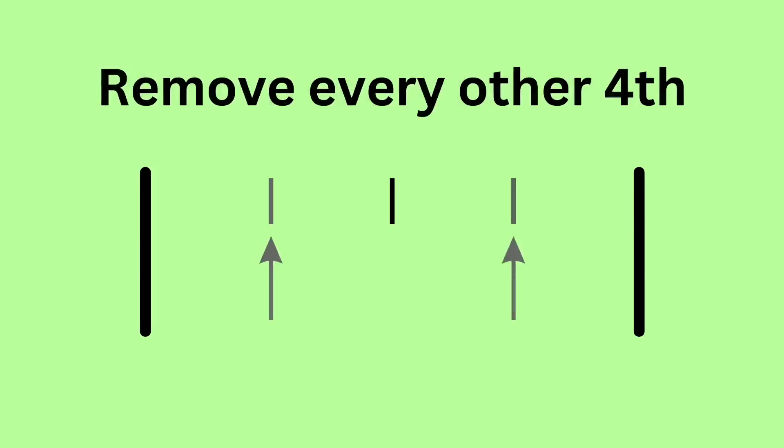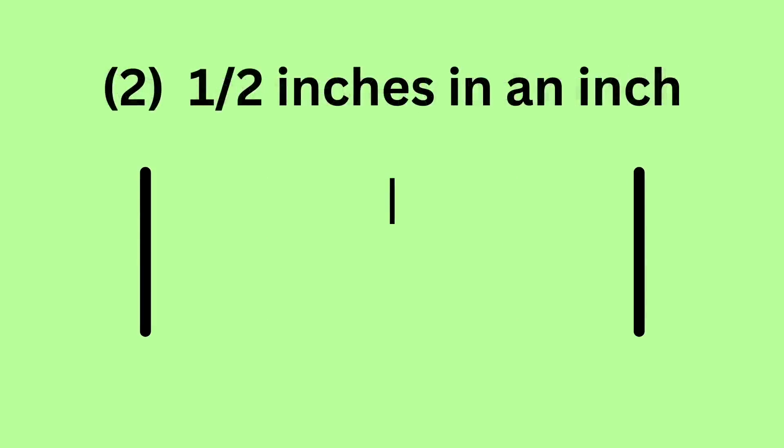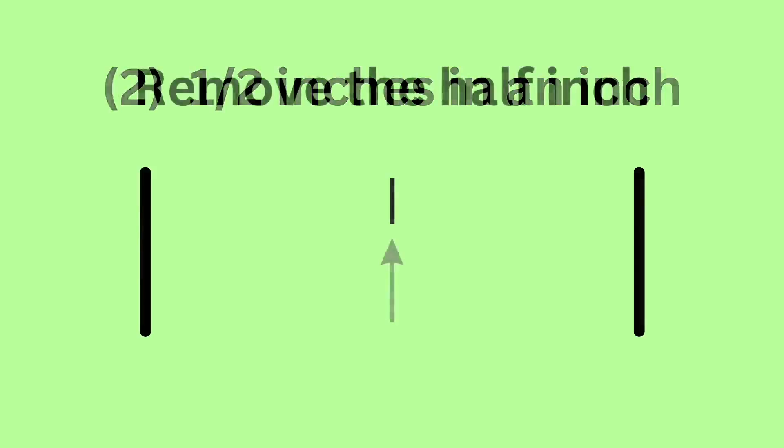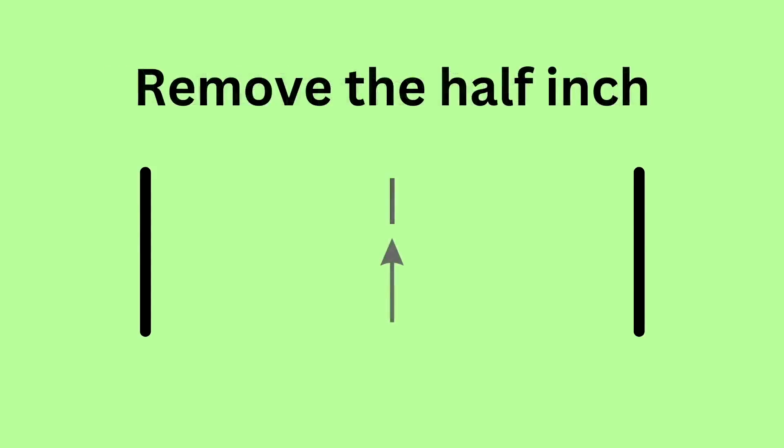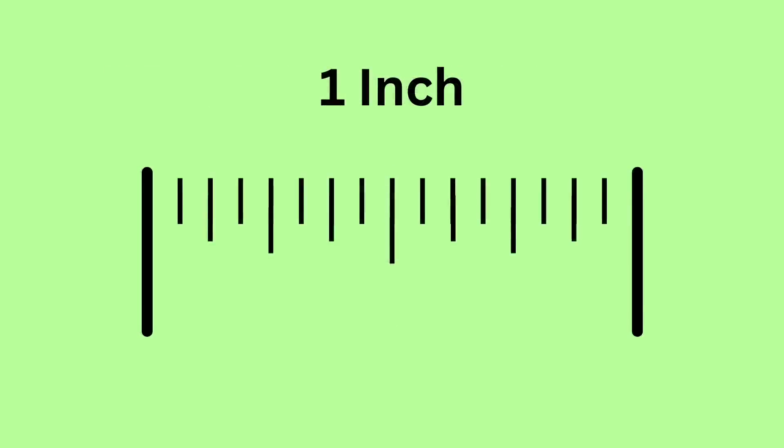When we do that, we get fourths, and there are four fourths in a whole inch. Isn't that interesting? So every other 16th removed is an eighth, every other eighth removed is a fourth. What happens if we remove every other fourth? We get two halves. So these are our half inches. Now you guessed it, if we remove that half, we're back to a whole.